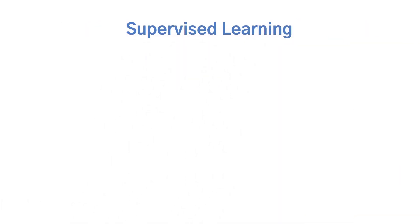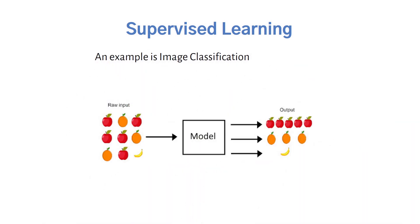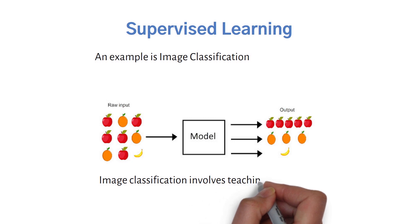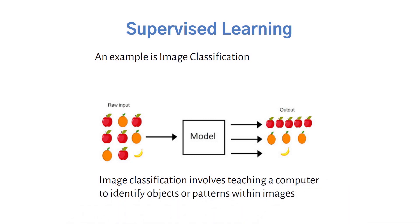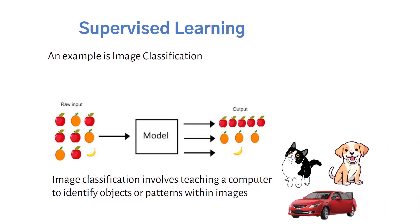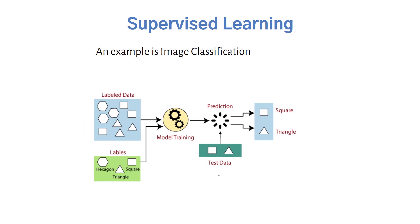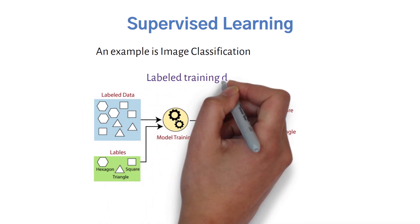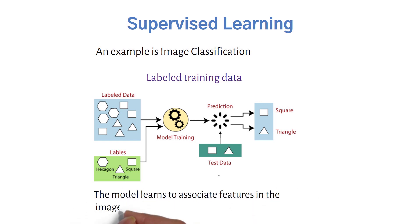Supervised learning. An example is image classification. Image classification involves teaching a computer to identify objects or patterns within images, such as recognizing cats, dogs, or cars in pictures. Supervised learning is used because it relies on labeled training data, where each image has a known category. The model learns to associate features in the images with these predefined categories.